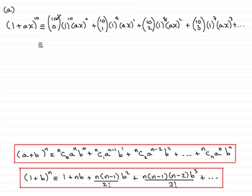So all we need to do now is just work out what each of these terms come to. Well, 10C0 you can do on your calculator, but you should really know this, it is 1. 1 to the power 10 is 1 and AX to the power 0 is 1. So that all comes to 1. 10C1 is going to be 10. 1 to the power 9 is 1 and so you've just got AX times the 10. So you have 10 AX.